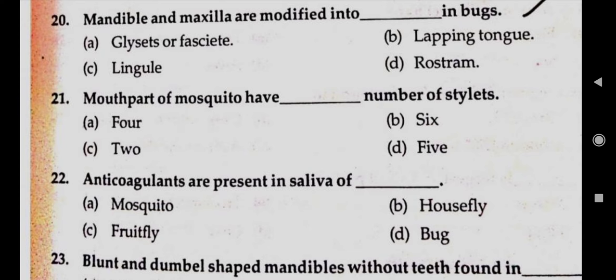Question number twenty-one: mouthparts of mosquitoes have dash number of stylets. Answer B, six. Question number twenty-two: anticoagulants are present in saliva of. Answer A, mosquitoes.